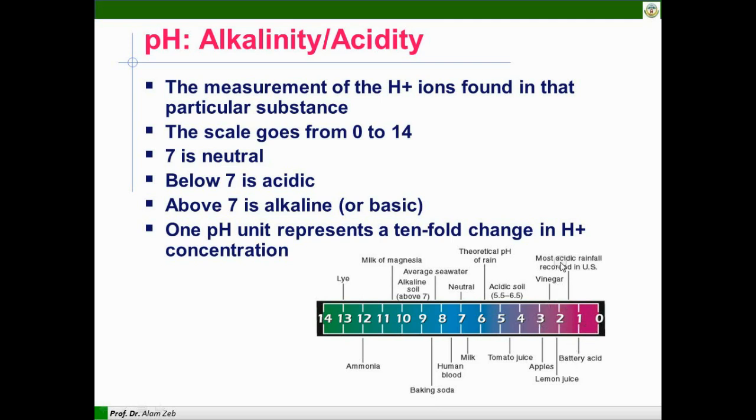Battery acid, lemon juice, apple juice, tomato juice, vinegar are in the acidic range. pH 7 is neutral. Seawater, milk of magnesia, baking soda, ammonia have a higher pH and they are usually basic in nature.